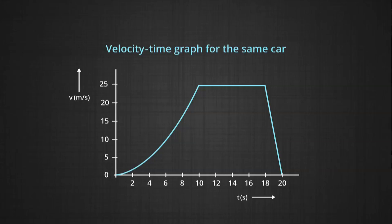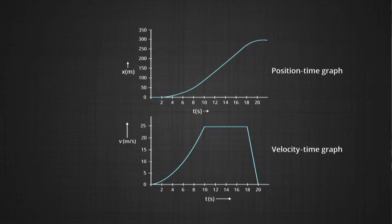After the constant speed phase, the velocity suddenly drops to zero — meaning the car has stopped. Does this appear on the position-time graph? Yes. Looking at both graphs together with matching time axes, you can see the position of the object remains the same for a certain duration, confirming that the car slowed down and then stopped.